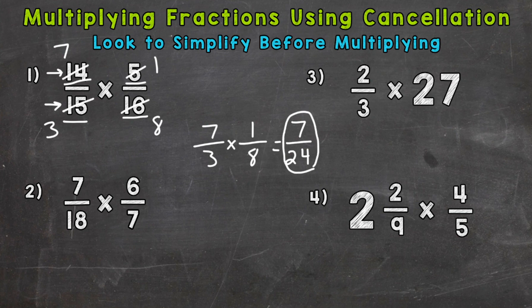So we are done. So you can see that we got much simpler and easier numbers to work with compared to the original problem. So let me rewrite the original problem here. 14 15ths times 5 16ths. So 14 times 5 is going to give us 70. And 15 times 16 is going to give us 240. So you can see that those multiplication problems there are a little more complex. And the numbers are greater in value than our cancellation version there of 7 over 3 times 1 over 8.